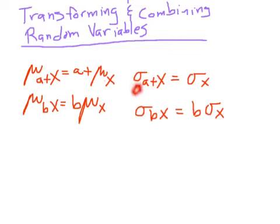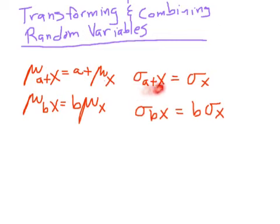What happens to the standard deviation of a constant plus a random variable x? We talked about it before — if I curve a test by adding five points, the standard deviation doesn't change. So this formula just reflects that: the standard deviation of a constant plus a random variable x is just the standard deviation. The standard deviation doesn't change.